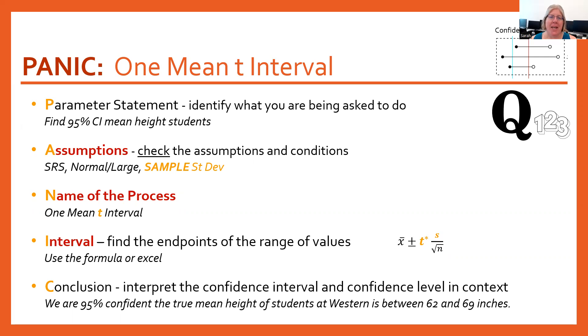The P step is still exactly the same — you're making some sort of statement about what you're asked to do, for example a 95% confidence interval for mean height of students.